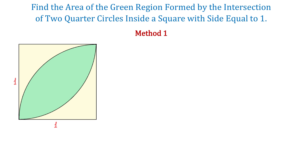We will start by finding the area of the square. For this, we will multiply 1 times 1, and we will get 1. In the next step, we will find the area of a quarter circle.